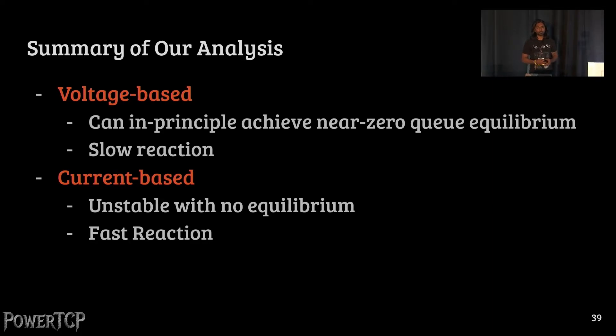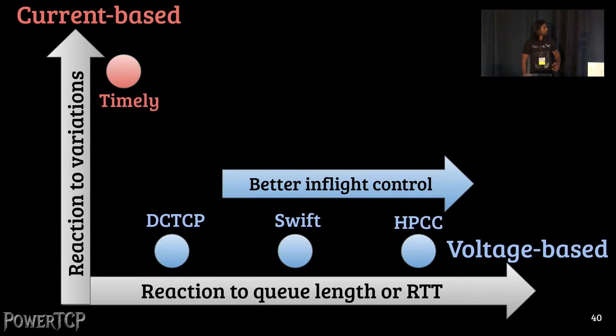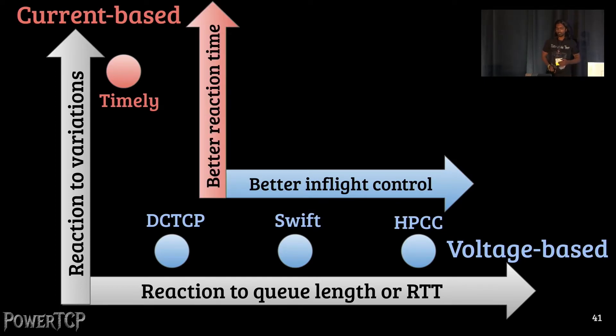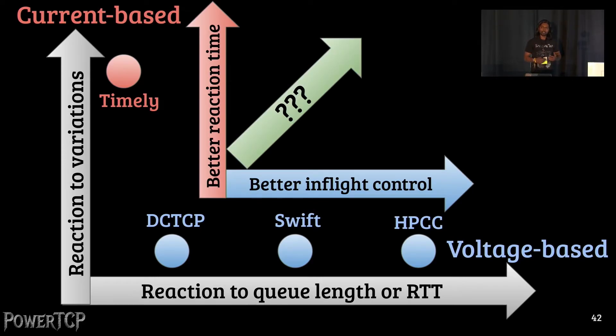In the paper, we analyzed both the class of algorithms in detail. And in summary, what we find is that voltage-based class of algorithms can, in principle, achieve near-zero equilibrium, but they are slow at reaction to congestion. Current-based algorithms, on the other hand, they are indeed unstable without an equilibrium, but they do exhibit fast reaction to congestion. To put it into perspective, voltage-based class of algorithms offer better in-flight control. Current-based algorithms offer better reaction time. We are motivated with this question that how do we combine current and voltage systematically by providing best out of the two worlds, but without inheriting their drawbacks.